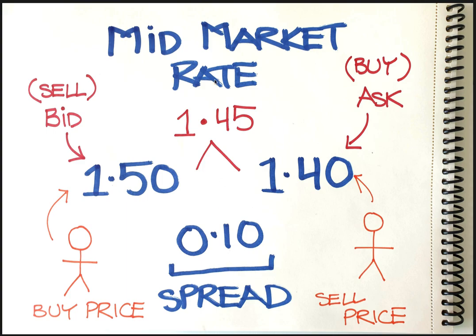So what's the mid-market rate? If this is the market rate for selling and this is the market rate for buying, the mid-market rate would have to be in between. If you take 1.5 plus 1.4 and add them together, that's 2.9, and 2.9 divided by 2 is going to be 1.45. So that's the mid-market rate.